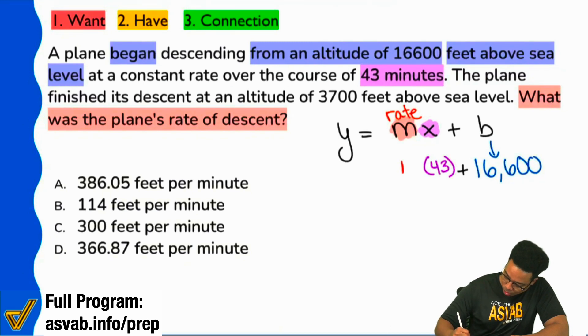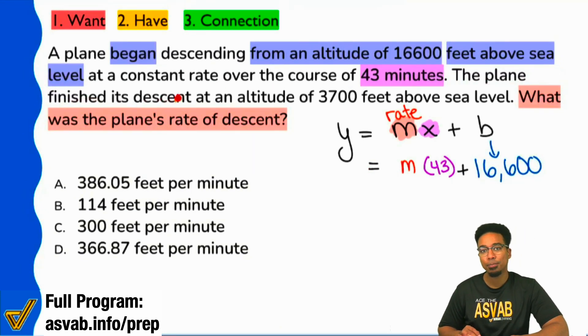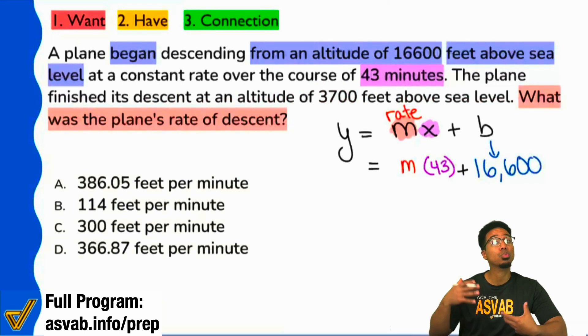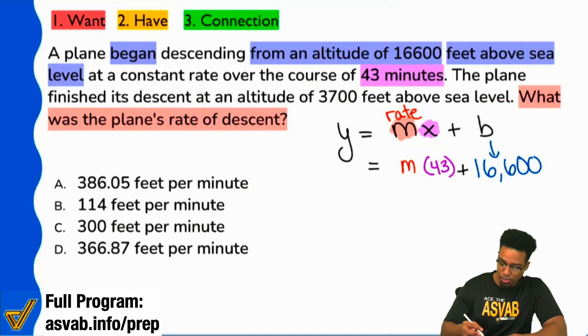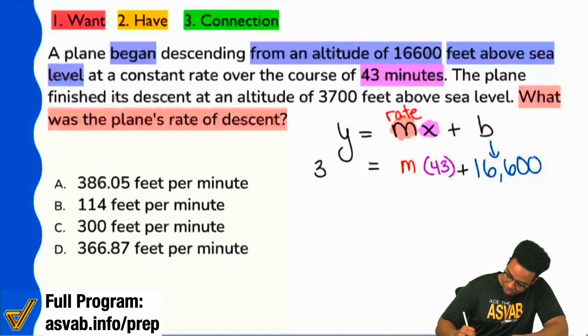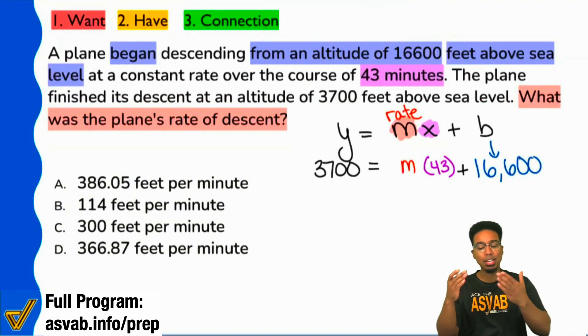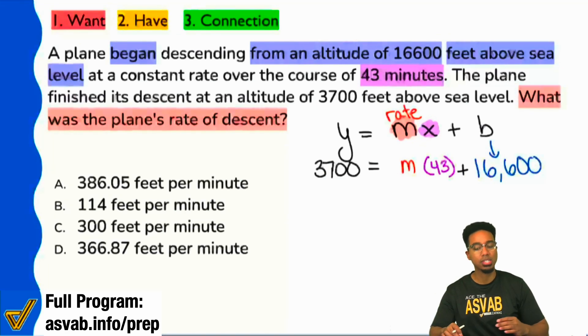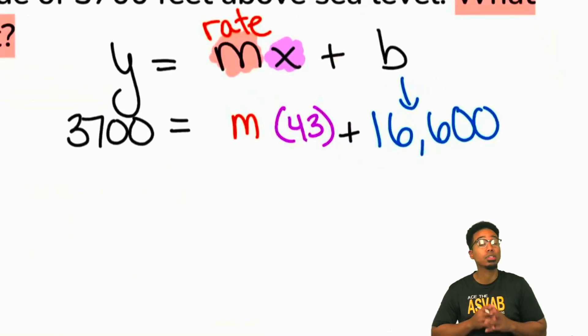We're looking for the M. And what is the resulting amount? Well, it says right here, the plane finished its descent at an altitude of 3,700 feet above sea level. So that's where it finished. That's where it resulted, its resulting altitude. Boom. There we are. 3,700 feet. Everyone, yes or no? Do you agree with the setup? Is this setup properly in your eyes? And there we go. That's phase one. Translating the English into math.